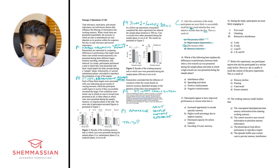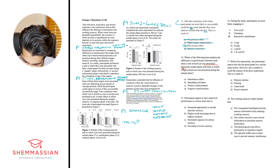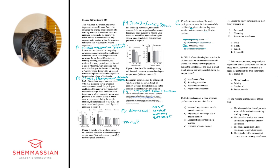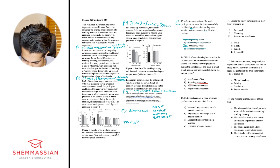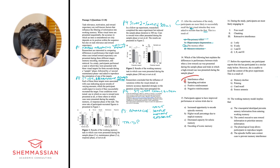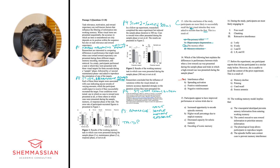Question 2: Which of the following best explains the differences in performance between trials when a low reward cue was presented during the sample phase and trials in which a high reward cue was presented during the sample phase? Options: A) interference effect, B) spreading activation, C) positive reinforcement, D) negative reinforcement. The interference effect tells us that attention to external information — such as a reward — can affect your recall. I like this answer a lot.